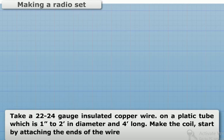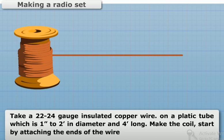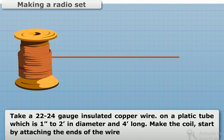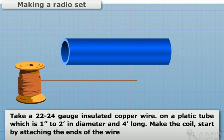Method: Take a 22-24 gauge insulated copper wire on a plastic tube which is 1-2 inches in diameter and 4 inches long.